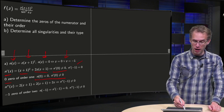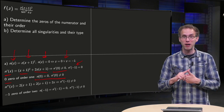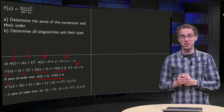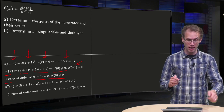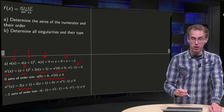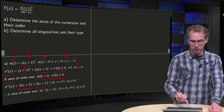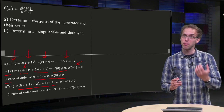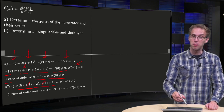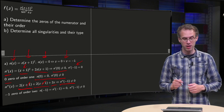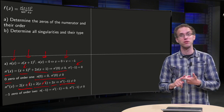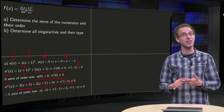Now computing N prime of minus 1 gives zero, so we have N of minus 1 equals zero and N prime of minus 1 equals zero — we do not know the order yet. For that we need N double prime. Computing N double prime gives 2 times (z plus 1) plus 2 times z. Plugging in minus 1, those terms cancel but we get minus 2, so N double prime at minus 1 is not equal to zero. That means minus 1 is a zero of order 2.